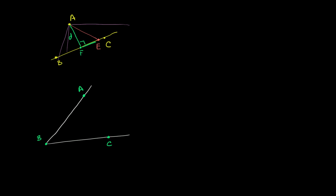We've talked about this a little bit before. So for example, if we want to bisect angle ABC — this angle right over here — we want to split it in two.